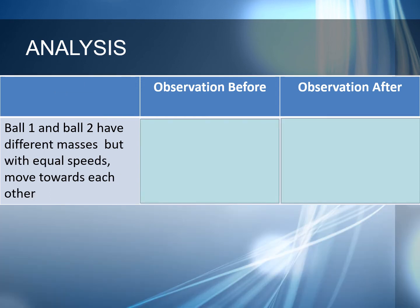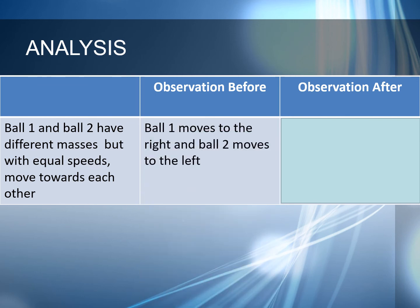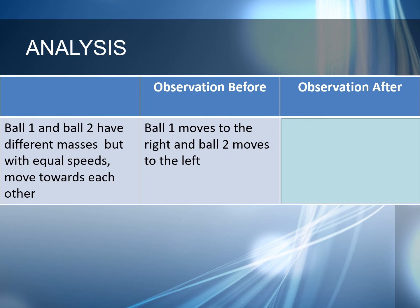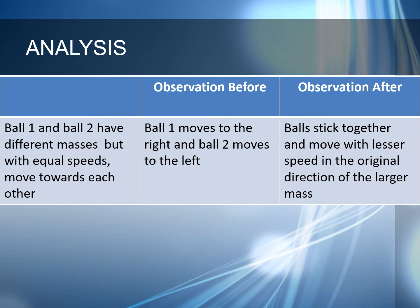For the last setup, ball 1 and ball 2 have different masses but with equal speeds moving towards each other. Before collision, ball 1 moves to the right and ball 2 moves to the left. After collision, the balls stick together and move with lesser speed in the original direction of the larger mass.